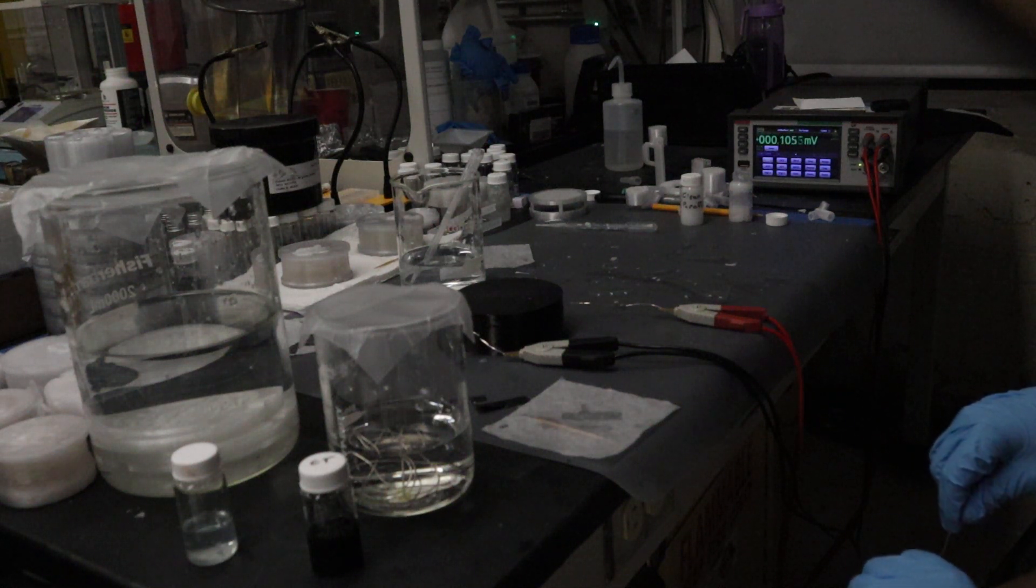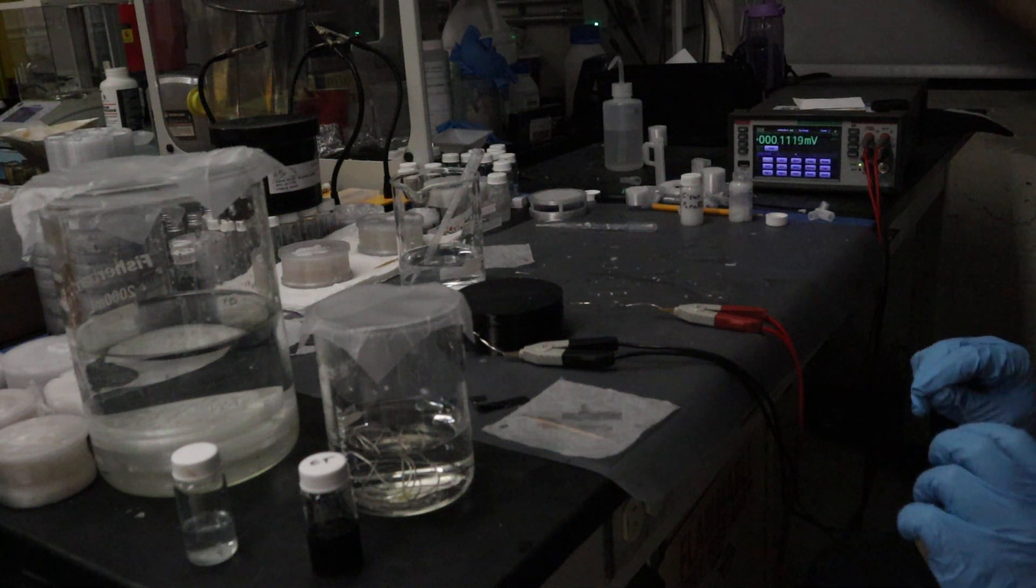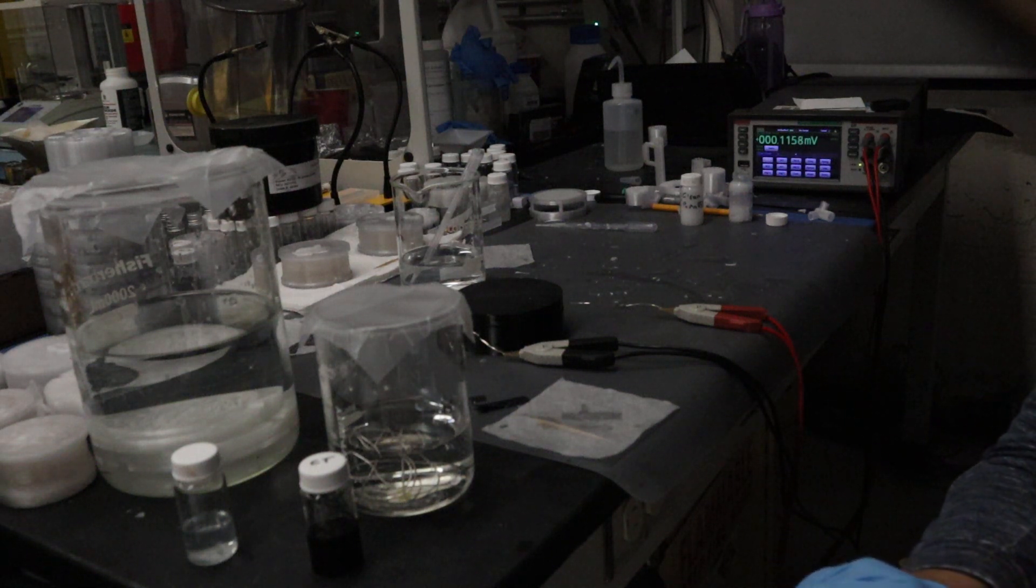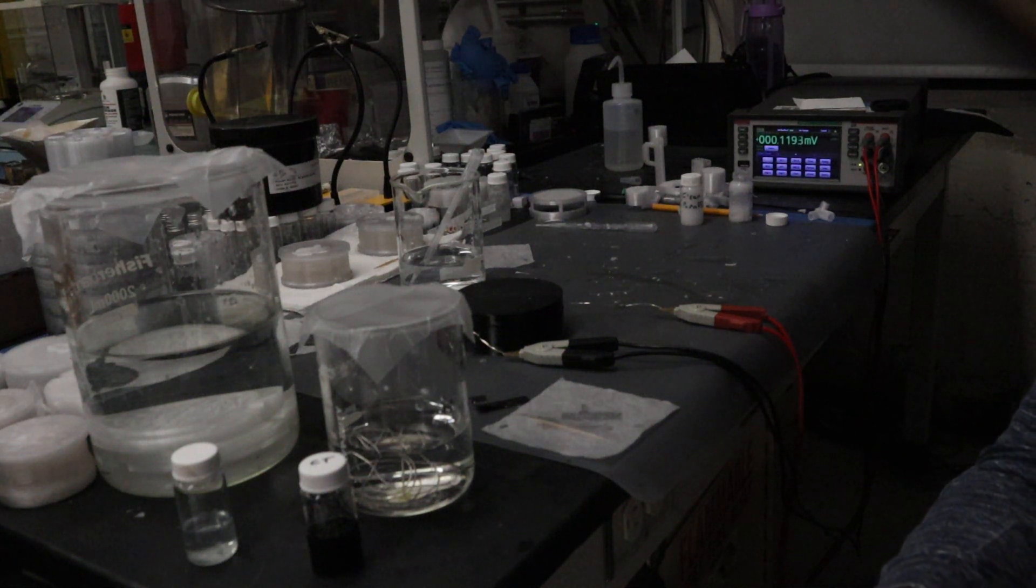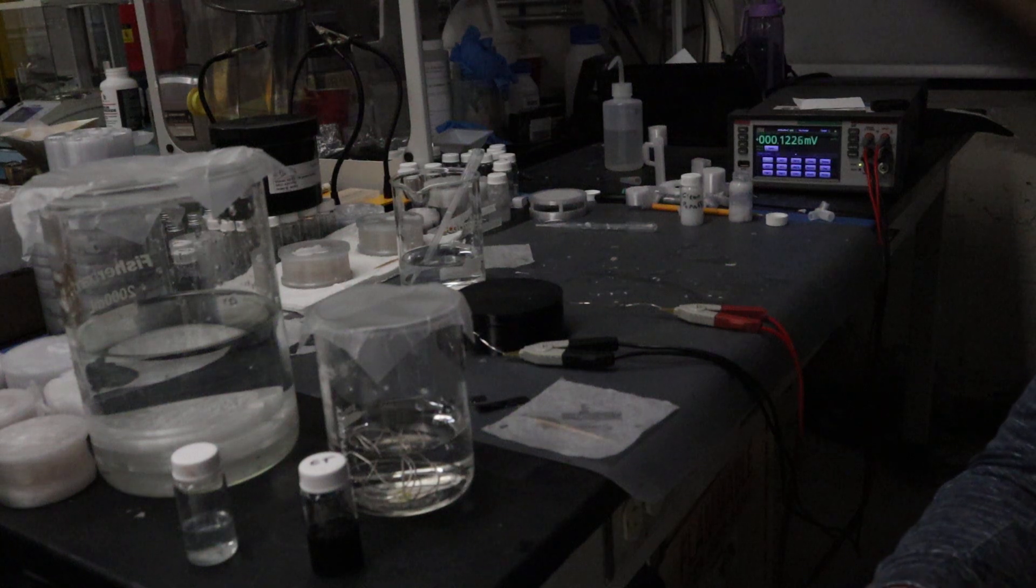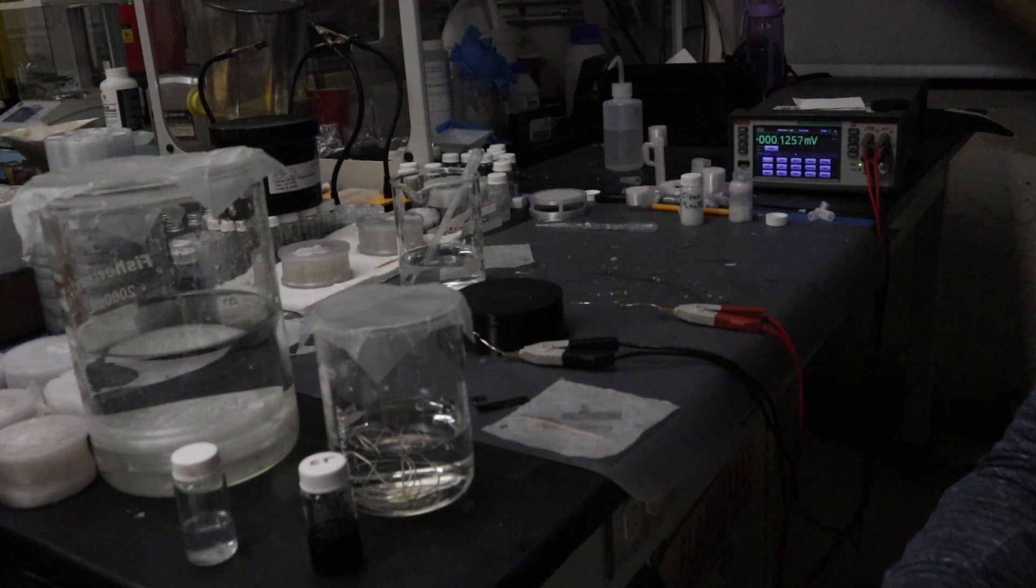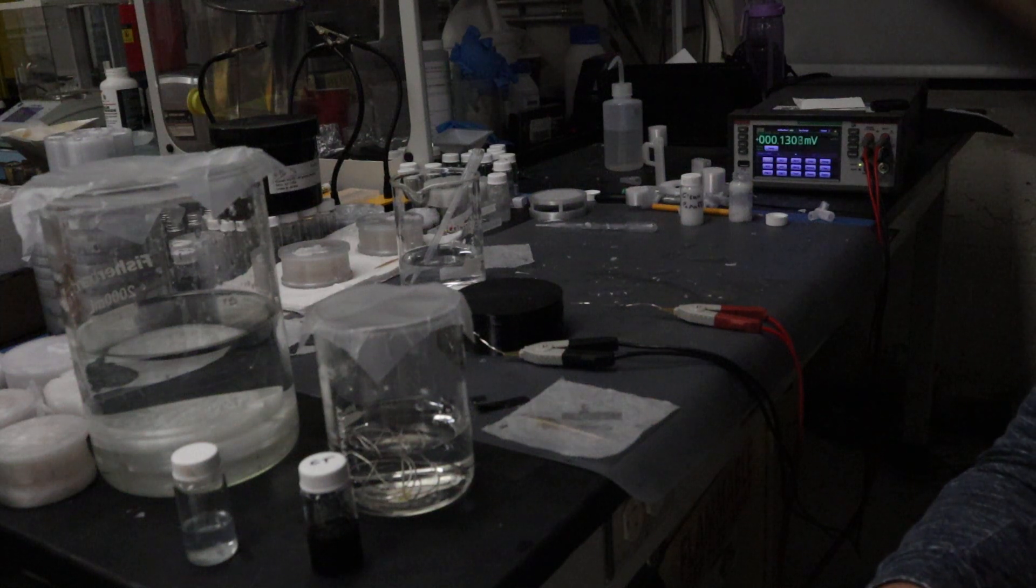It slowly charges up again. This is because the pH gradient is held in the steady state by the bipolar membrane, and the electrode potential of the graphitic carbon nitride is changing as a function of pH.